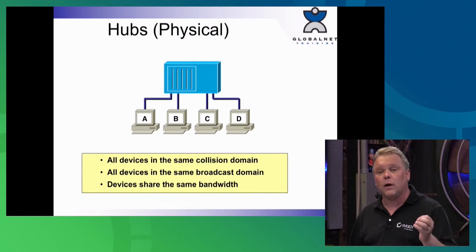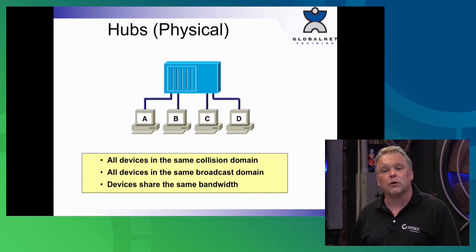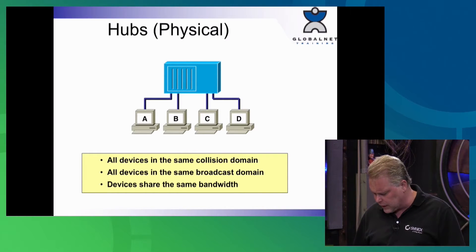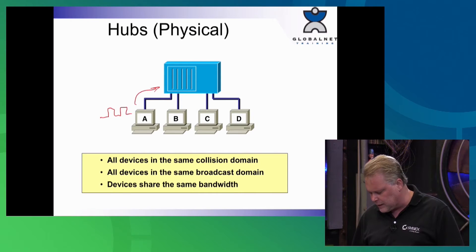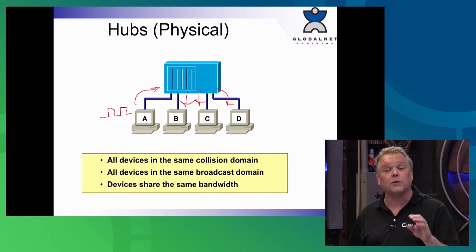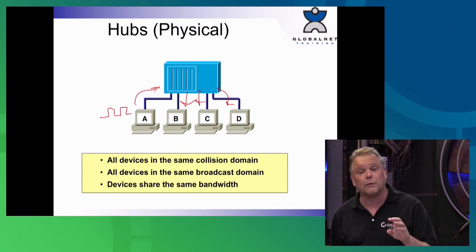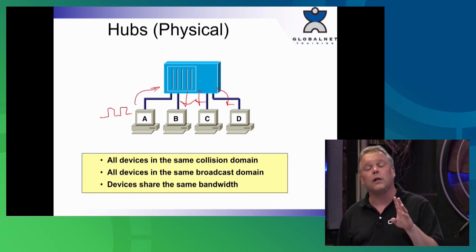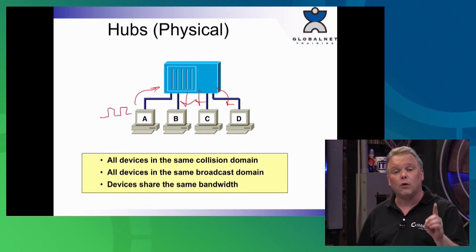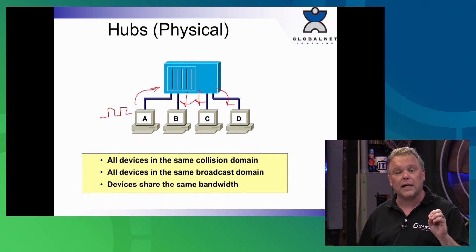To recap from day one: hubs are just a multi-port repeater. If one device sends a digital signal, it's sent out every other port. Hubs don't segment the network at all — all ports are in the same collision domain, it only runs half duplex, and all ports are in the same broadcast domain.